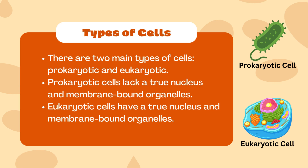Prokaryotic cells, like bacteria, lack a true nucleus and membrane-bound organelles. On the other hand, eukaryotic cells, found in plants, animals, fungi, and protists, have a true nucleus and membrane-bound organelles.